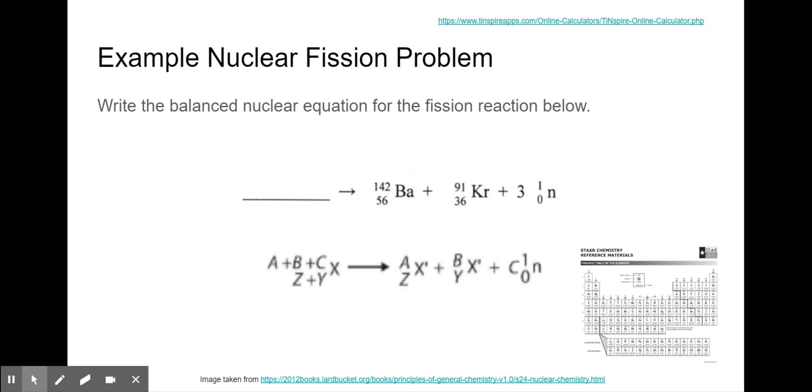Which would be 142 plus 91 plus 3. Because just like in a chemical equation, the coefficient is multiplied to the superscript, which would give me 236. So my nucleon number from the reactant side is 236.